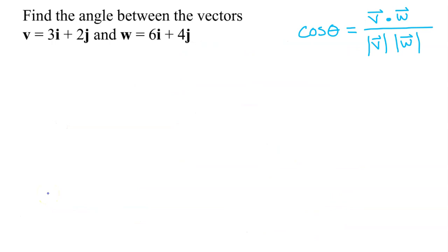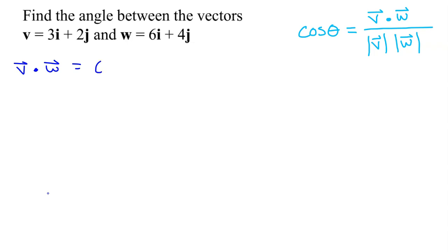Let's find the angle between these two vectors V and W. We will start by finding the dot product of V times W. That's going to be 3 times 6 plus 2 times 4, which is 18 plus 8, giving 26.